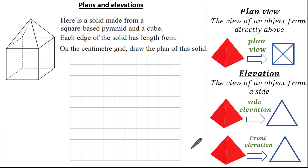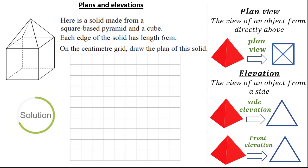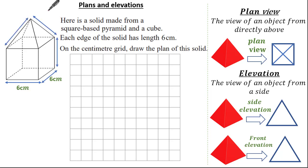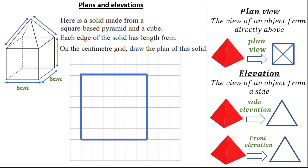Let's have a look at another exam question. Here is a solid made up of a square-base pyramid and a cube, where each length of the solid has a length of 6 centimeters. We're asked to draw the plan of this solid on the centimeter square grid. Remember, we want the plan view — imagine flying right above the solid. You'd see a square base with each length being 6 centimeters, and the apex of the pyramid illustrated by two diagonal lines.